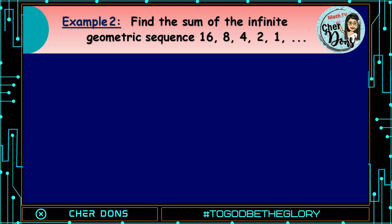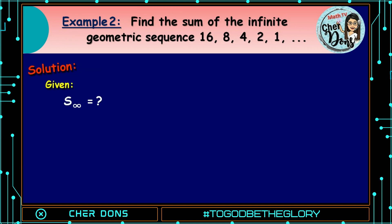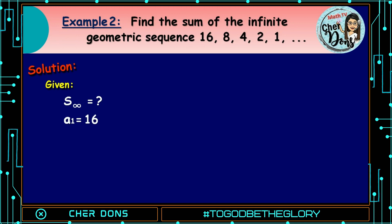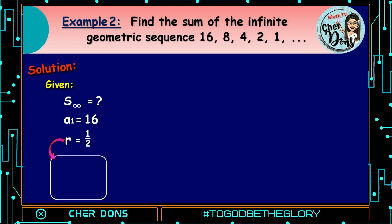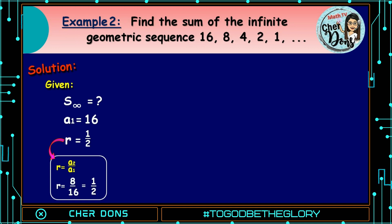Example number 2: Find the sum of the infinite geometric sequence 16, 8, 4, 2, 1, and so on. Given: we're looking for the sum to infinity. a sub 1 is equal to 16, and r is 1/2. We get r by dividing the second term by the first term — a sub 2 divided by a sub 1 — and that is 8 divided by 16, which equals 1/2.